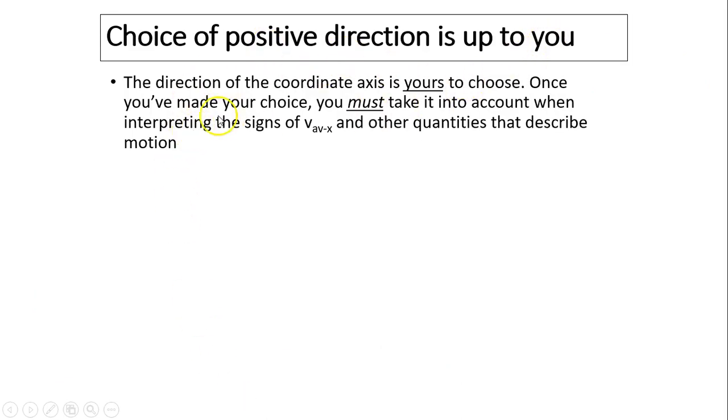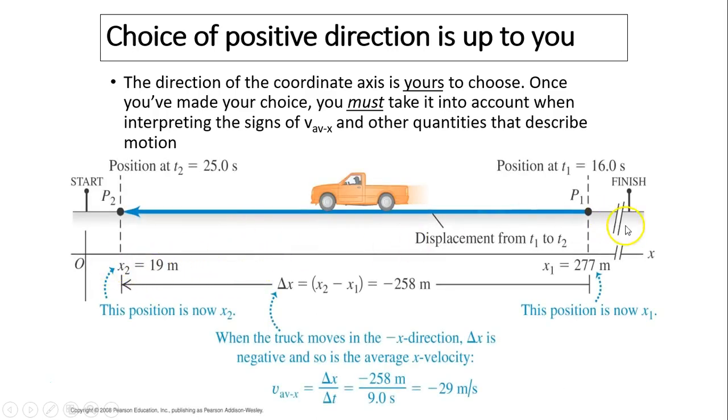Choice of positive direction is really up to you. So the direction of coordinate axis is yours to choose. Once you have made your choice, you'll have to stick with it and keep it the same throughout your calculations. For example, the same coordinate system, if we choose going to the right is positive and here is 0. We can use the same for the truck as well. So the truck is going to the left in this case. So if going to the right is positive, going to the left has to be negative. So to calculate the truck's average velocity, we use change in position divided by change of time. Change of position is 19 meters minus 277 meters because this is the first position. If this is a final position and the time is 9 seconds, I use 25 minus 16.